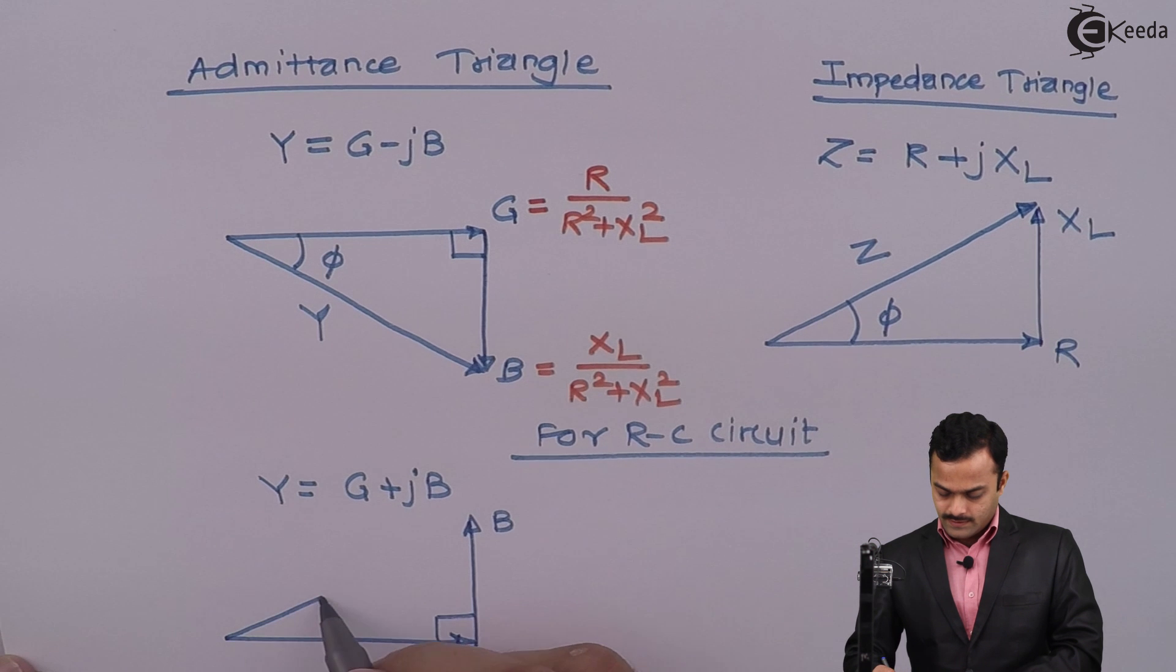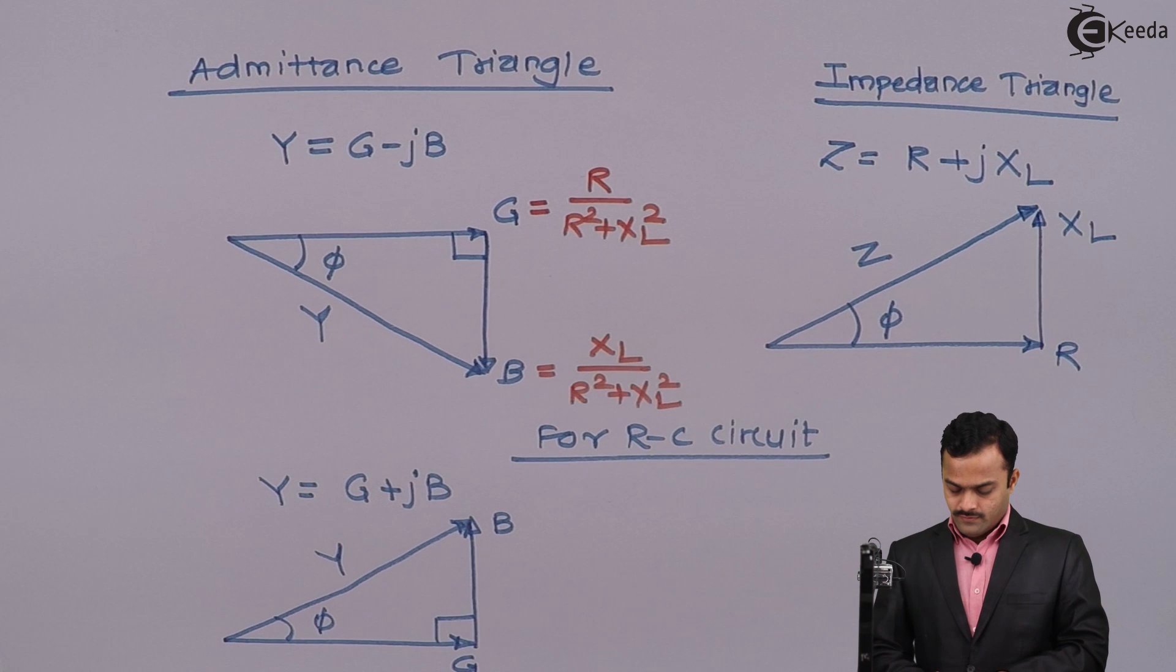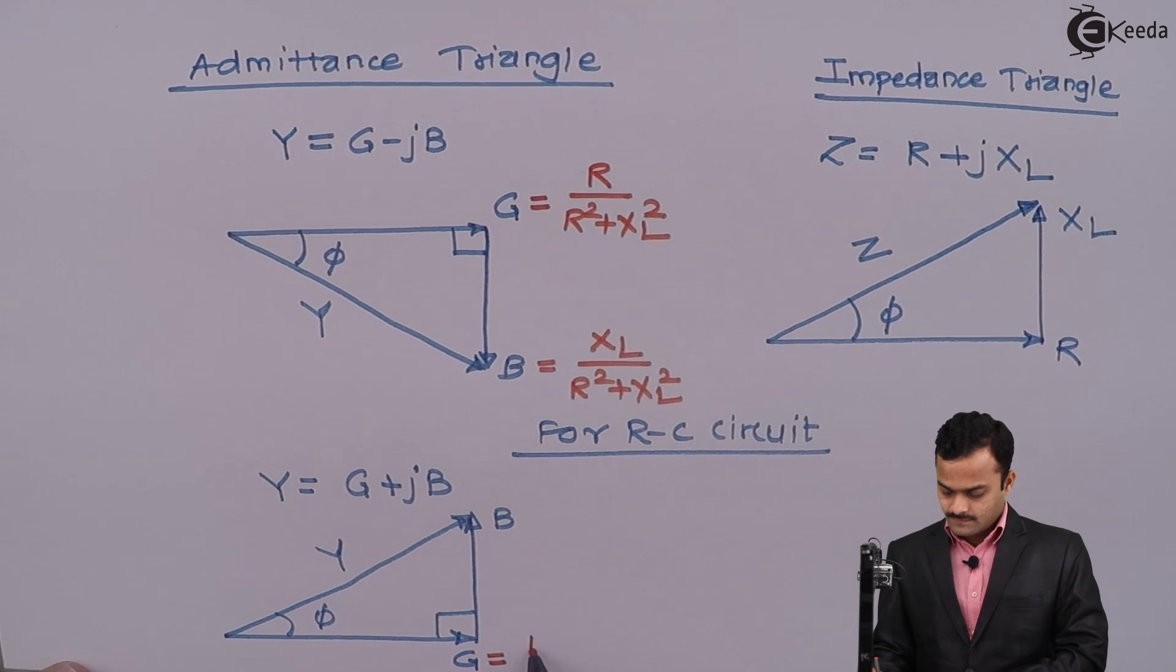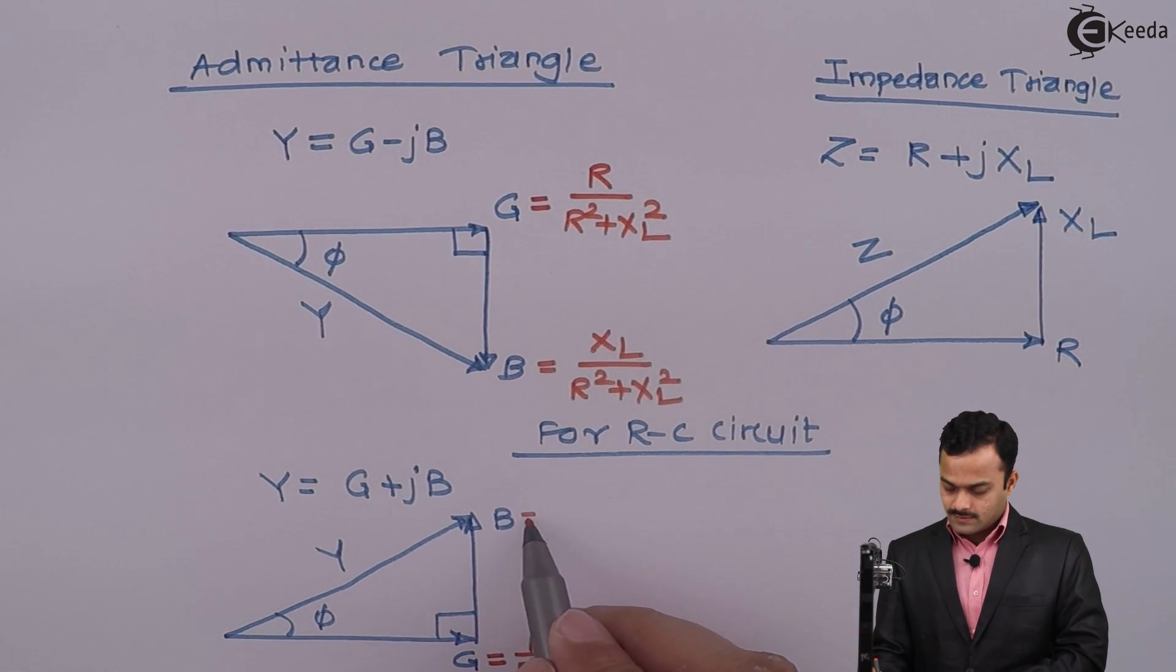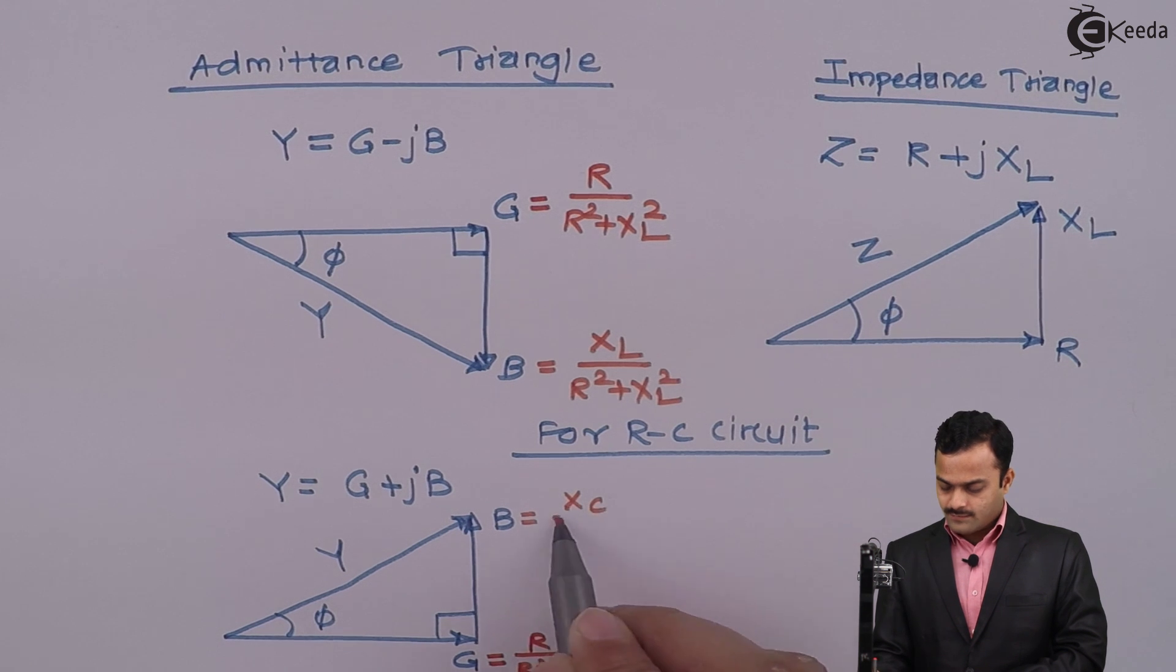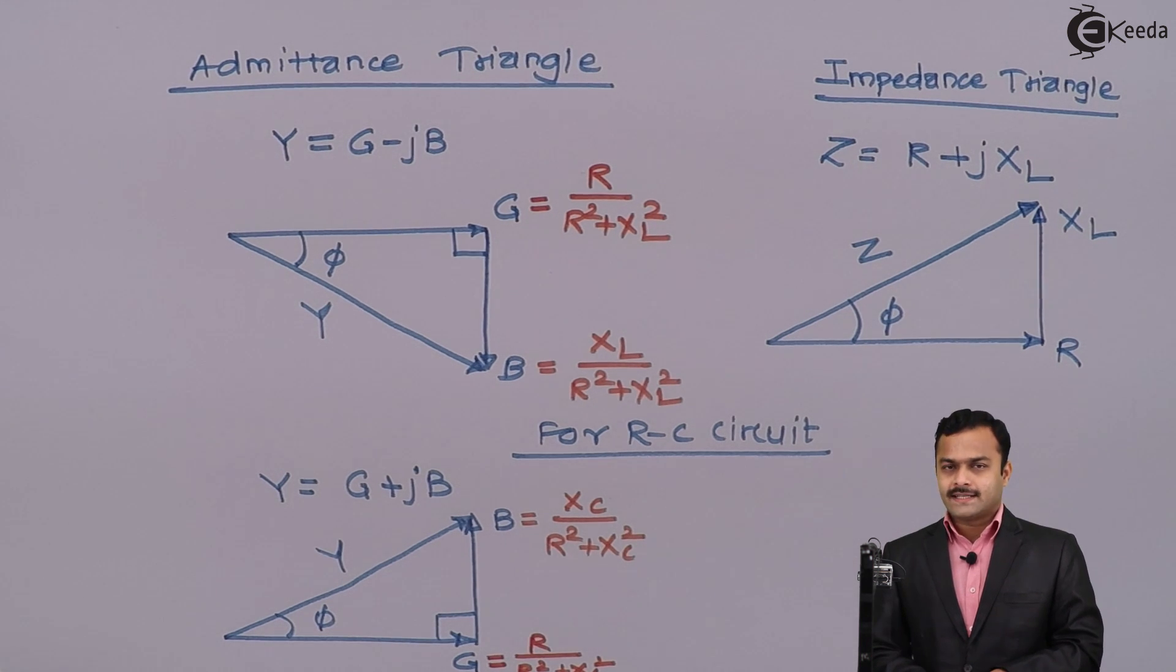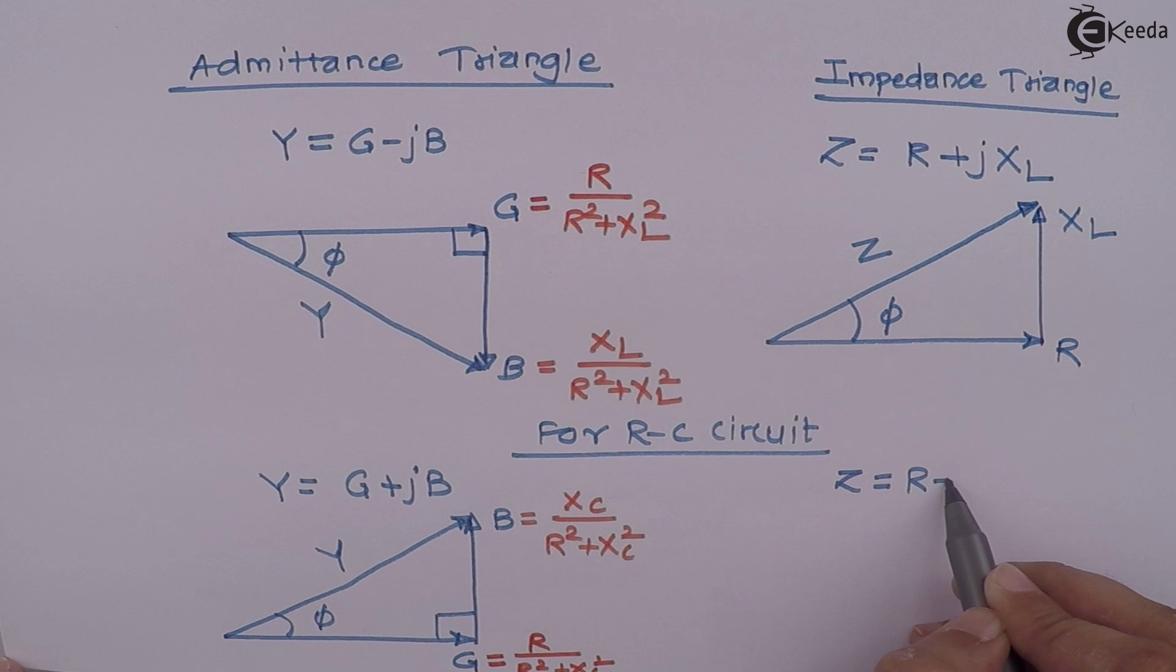This angle is φ, where G is the conductance given by R/(R² + XC²), and B is XC/(R² + XC²), where XC is capacitive reactance. The corresponding impedance triangle for Z = R - jXC will be like this.